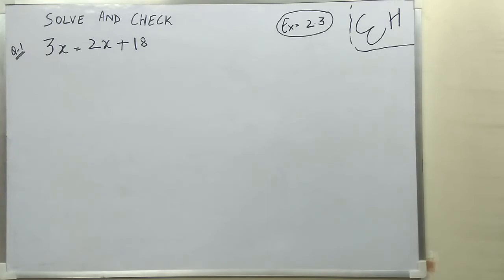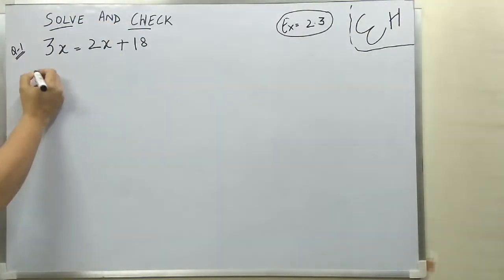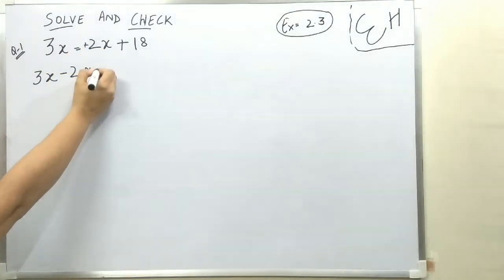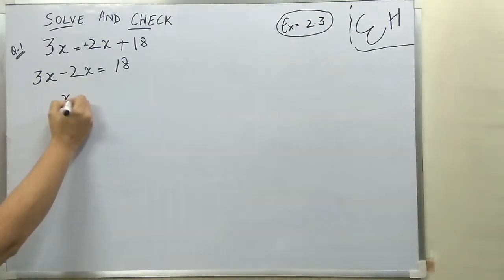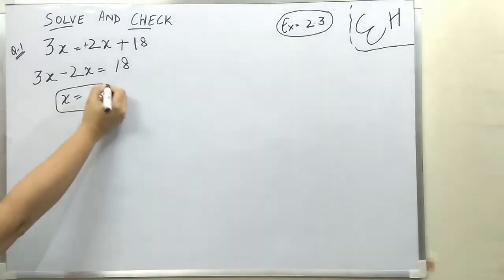Chapter 2, Exercise 2.3: Solve the following equations and check your answer. You have to find the value of x, then you also have to check your answer. 3x and 2x — when we bring 2x here it will become minus. 3x minus 2x is x, so x is 18. Your value of x is 18.